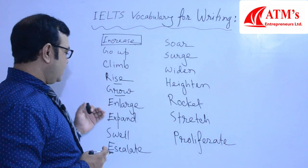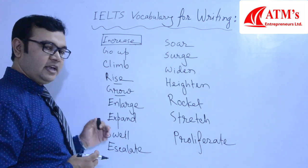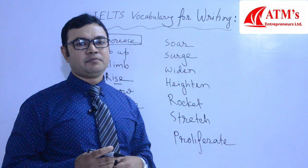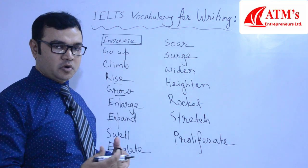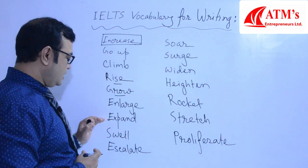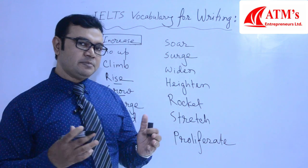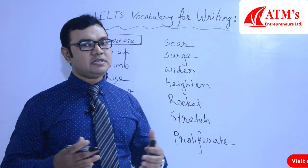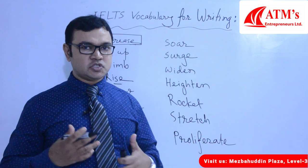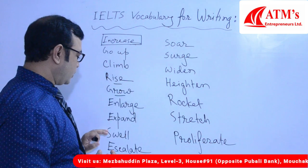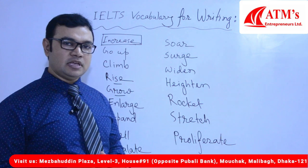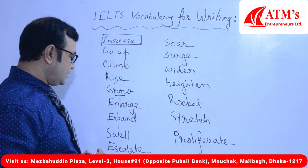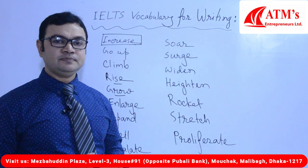Next is 'expand' — expand meaning growth, so you can write expand to express growth. Then there is 'swell' — when there is rapid growth you can write swell, meaning swelled up. The past tense is 'swelled'. And going back to increase meaning go up, you can also write 'escalate' — escalate means to rise sharply.